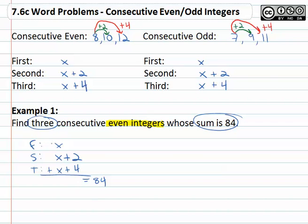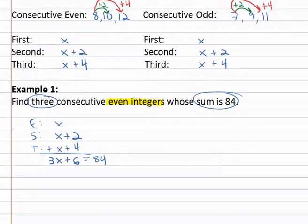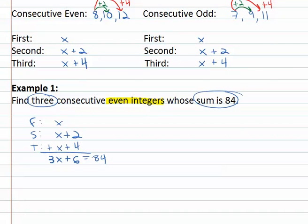When we add this up and combine like terms, we have three x's plus 2 plus 4 is 6. I'm running out of space so I'm going to scroll a little bit. Subtract 6 from both sides, we get 3x equals 78, and then finally divide both sides by 3 to find out x is equal to, 78 divided by 3 is 26.